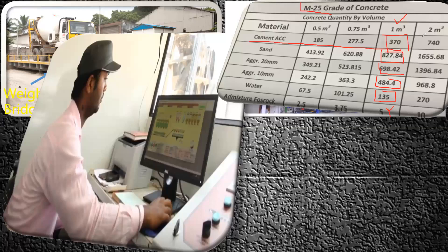If you want to prepare two cubic meters of concrete, you follow the corresponding chart. You input the required quantity — say two cubic meters — into the system. The entire system is set up so that cement of 740 kg flows through the machine via conveyor belt, sand of 1655 kg comes in, 20 mm aggregate of 1396 kg comes in, 10 mm aggregate of 968 kg comes in, and water of 270 liters flows from the storage tank — everything comes automatically in the batching plant with a single click.